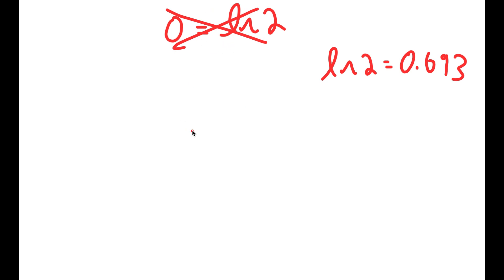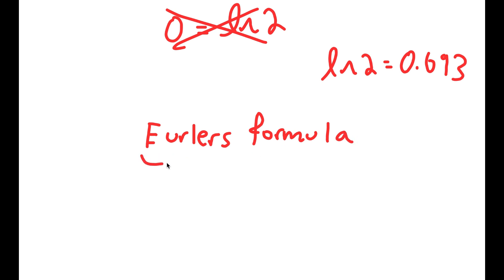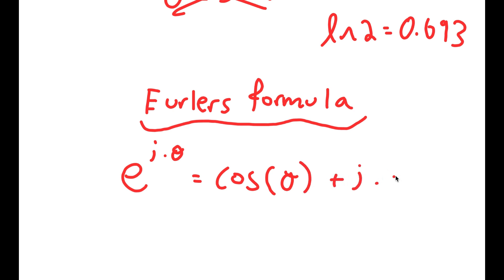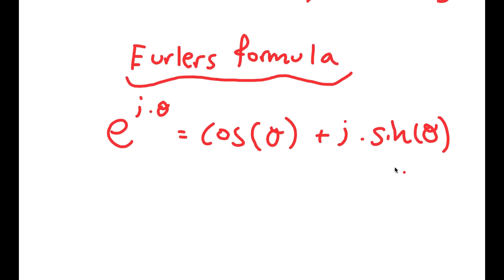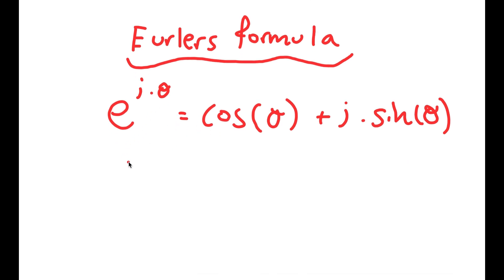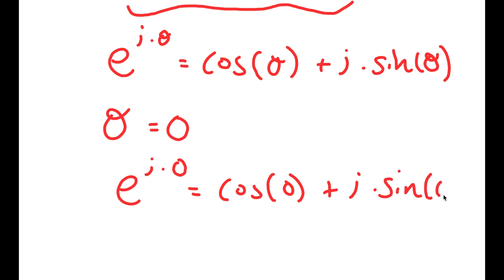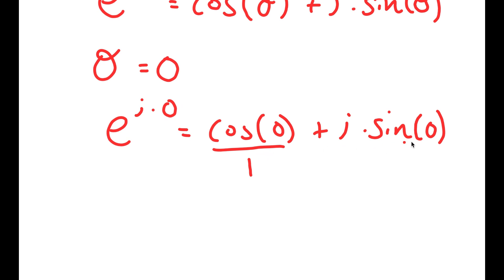Now, what I'm going to do is use an important formula known as Euler's formula. This formula states that if I have something in the form e to the power of i times theta, this is equal to cosine of theta plus i times sine of theta. Let's walk through it — what if theta is equal to 0? That gives us e to the power of i times 0 is equal to cosine of 0 plus i times sine of 0. Cosine of 0 is equal to 1, and sine of 0 is equal to 0.